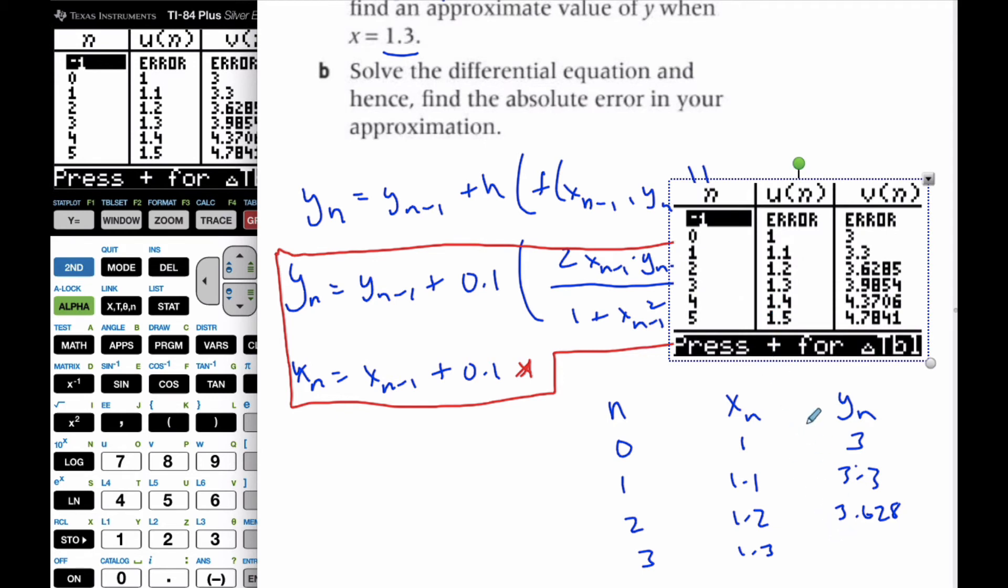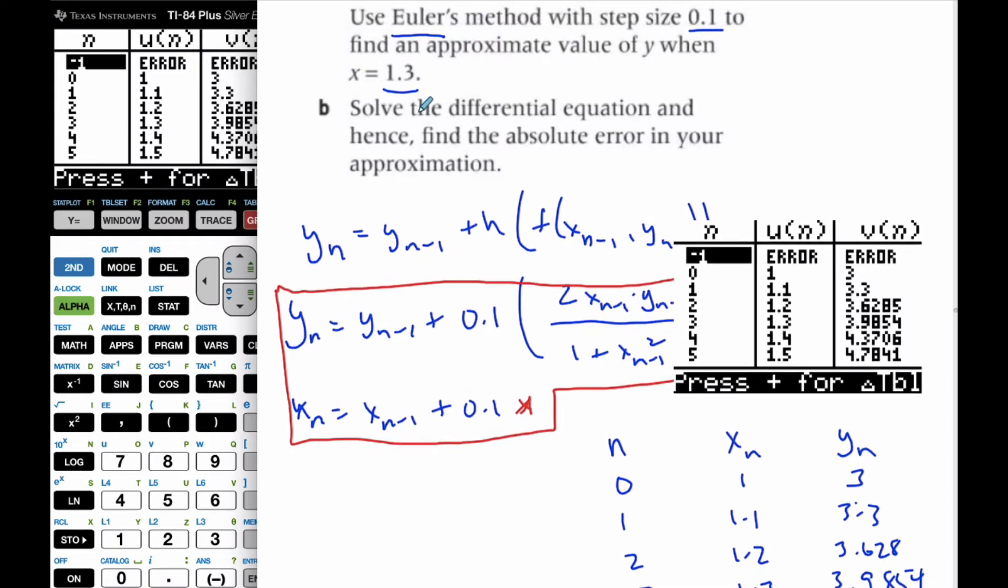I get 3.9854. So this is the approximate value based upon Euler's method, and that is A part.